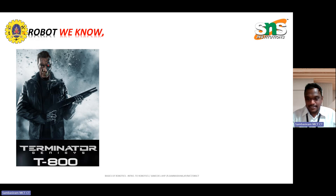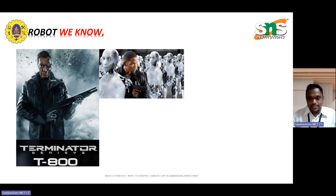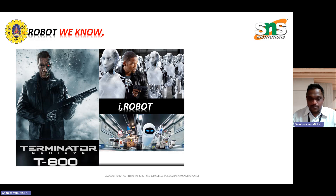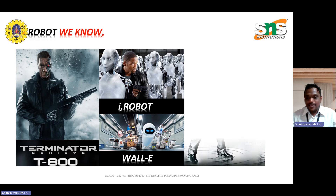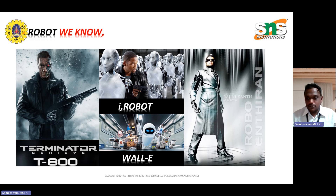We can reference the film Terminators — there are a lot of series in the film. Similarly, this is an AI robot, and another one is a world robot. These are the robots we have seen in Hollywood industries. We can also know the robot through the Indian superstar Rajinikanth, who starred as a robot in two films — Enthiran and 2.0. This is the robot we can see.